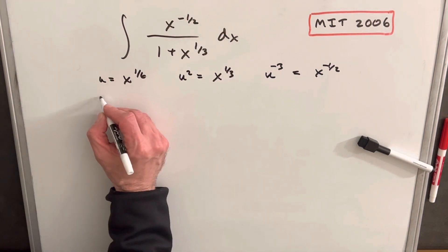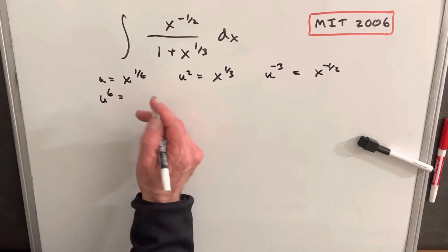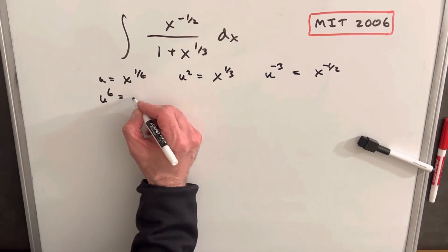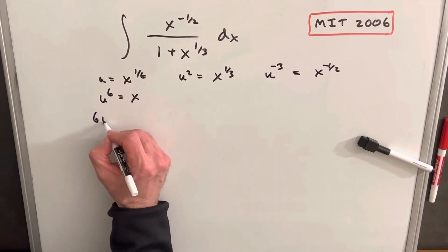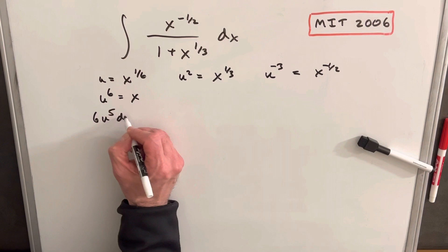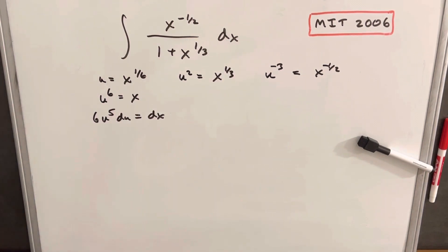I think for dx, what I'm going to do, let's just take, if we raise u to the sixth power, if we raise x to the one-sixth to the sixth power, we're going to just have x. So now if I take the derivative, I'm going to have 6u to the fifth du equals dx, and we'll use that for our substitution.